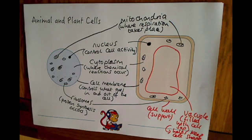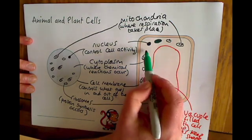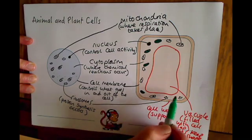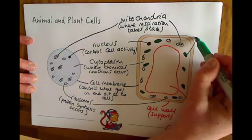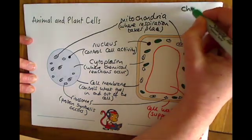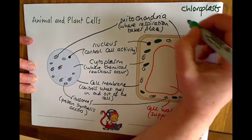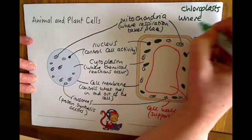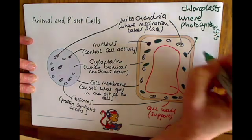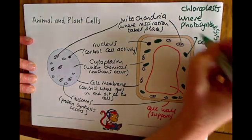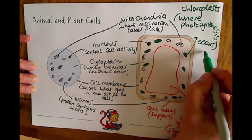And finally, a really important thing for plant cells is these chloroplasts, which I'm going to draw as green for a reason. So chloroplasts. And this is where the process photosynthesis occurs. Can't put it in, so I'll go down there, where photosynthesis occurs.